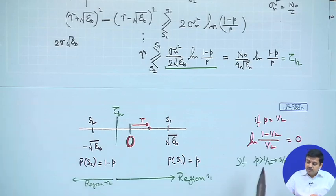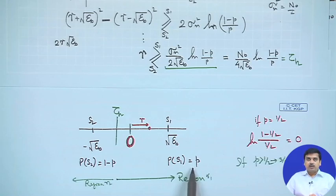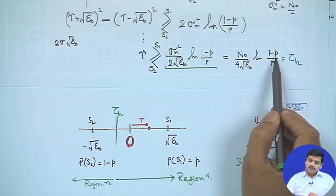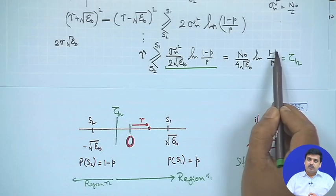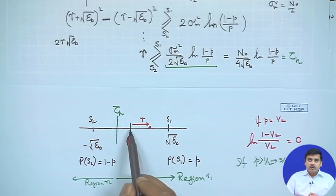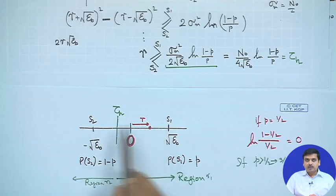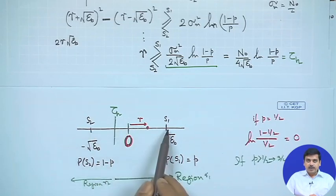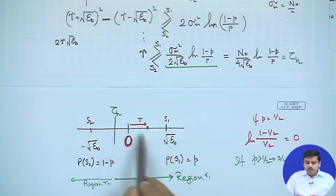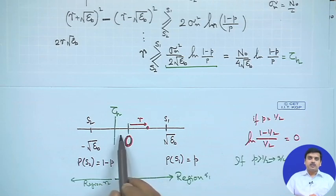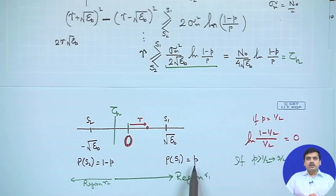If instead of the MAP receiver you implement the ML receiver — assuming equiprobable symbols — the threshold is always 0, regardless of the actual prior probabilities. This leads to a different probability of error compared to the MAP receiver. Only when the transmitted probability equals 1/2 do the ML and MAP receivers produce the same performance in terms of error probability.